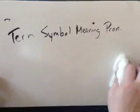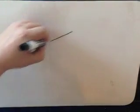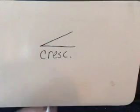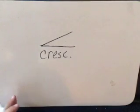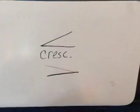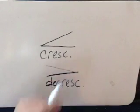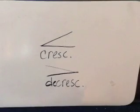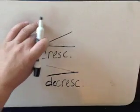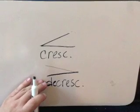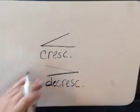There are three other terms with accompanying symbols underneath the table that you should know. One has a symbol that looks like an opening hairpin, and it stands for crescendo — it means to get louder gradually. The opposite is a closing hairpin, and the term is decrescendo, which means to get quieter. You may see either the written-out word or the hairpin symbol; both are considered valid.